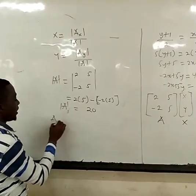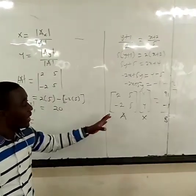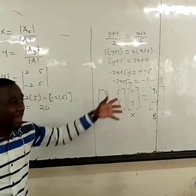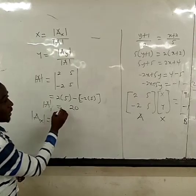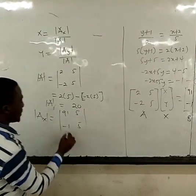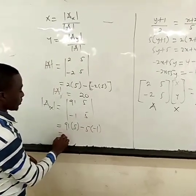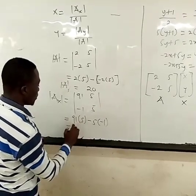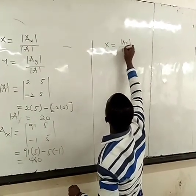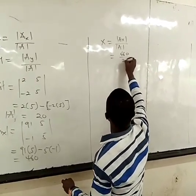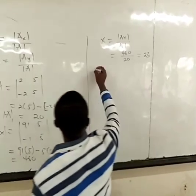The next thing is to find Ax — the determinant of the matrix Ax. To get Ax, you replace the first column of the coefficient matrix with the constant matrix. So we replace [2; -2] with [91; -1], giving the matrix [91, 5; -1, 5]. Finding the determinant: 91 times 5 minus 5 times negative 1 equals 455 plus 5, which is 460. So x equals 460 over 20, which gives us 23.